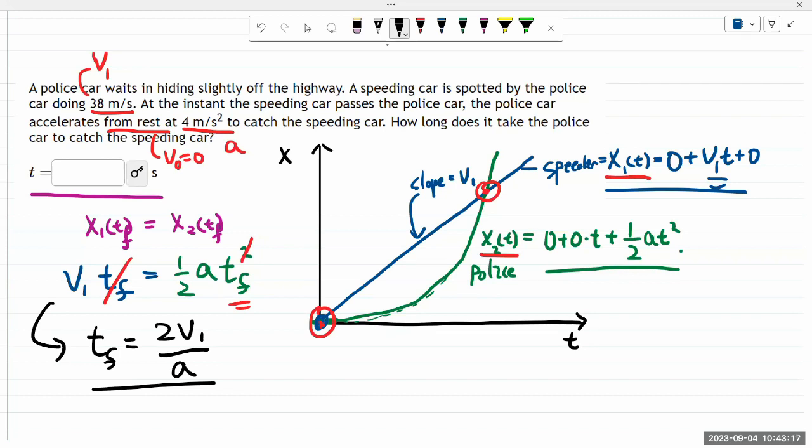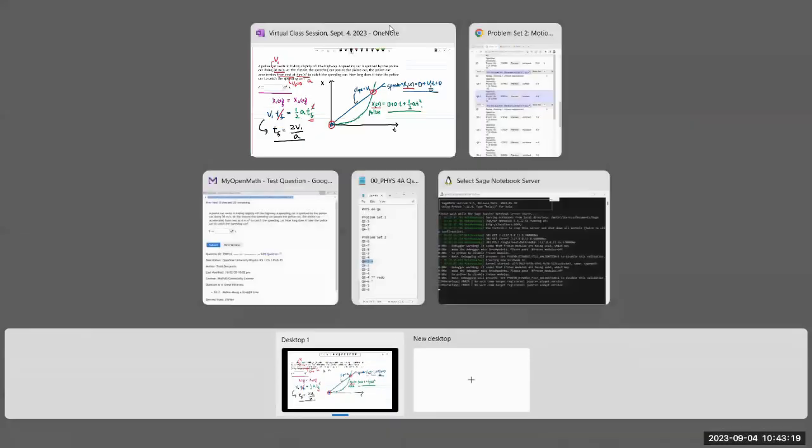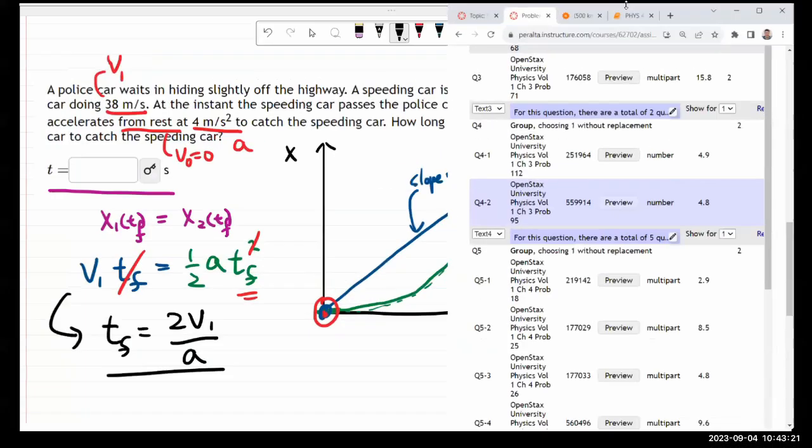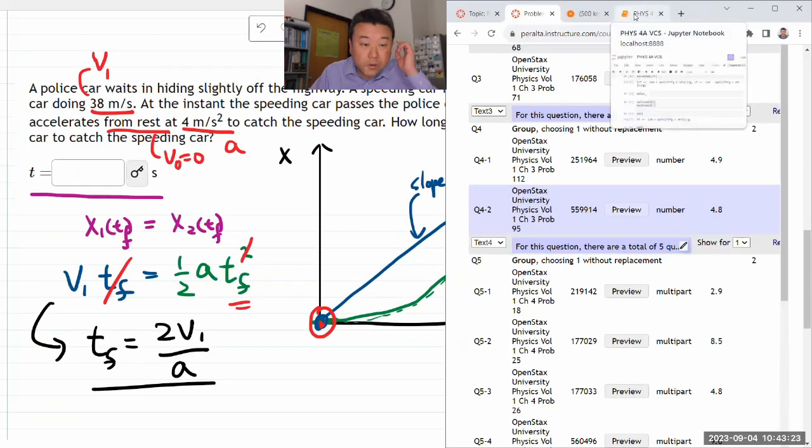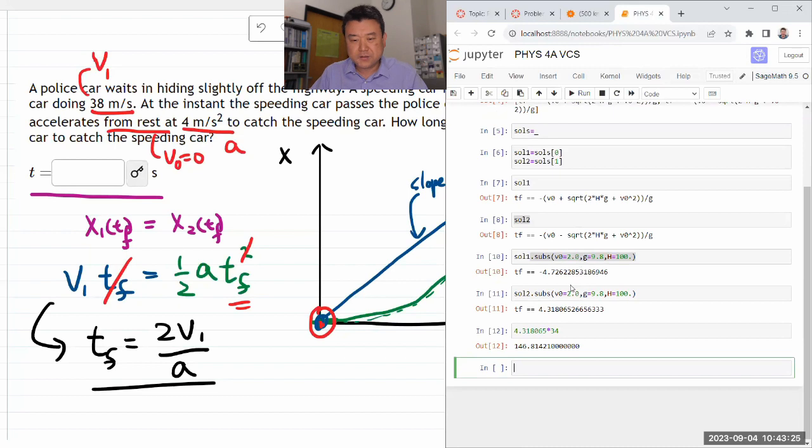So, yeah, let me, since I have WolframAlpha already, let me just continue to use that as my calculator. Or, you know, let me use SageMath. Let me use this as a glorified calculator. So it's going to be two times my initial speed, or not initial speed. This is the speed of the speeding car, 38 meters per second. And all the units are consistent. So I can just do the numerical calculation without converting any units. Divide by four meters per second squared.